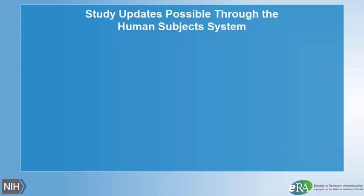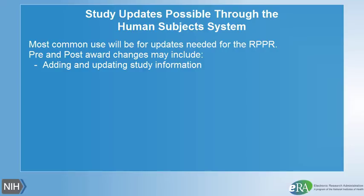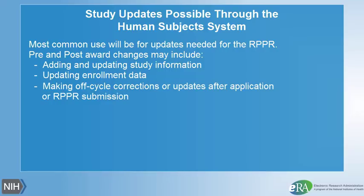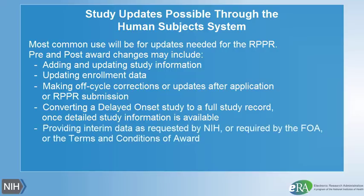Study updates are possible through the system. The most common use of this system will be for updates needed at the time of the Research Performance Progress Report. Pre- and post-award changes may include: adding and updating study information, updating enrollment data, making off-cycle corrections or updates after application or RPPR submission, converting a delayed onset study to a full record study once detailed study information is available, and providing interim data as requested by NIH staff, or in the Funding Opportunity Announcement, or in the Terms and Conditions of Award.